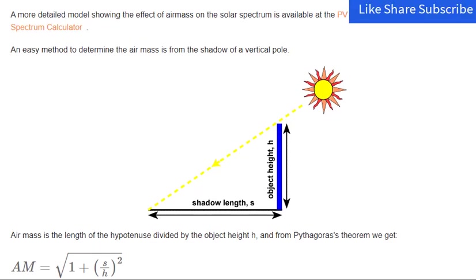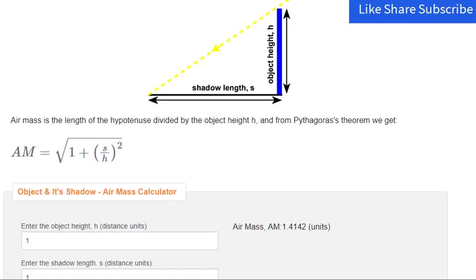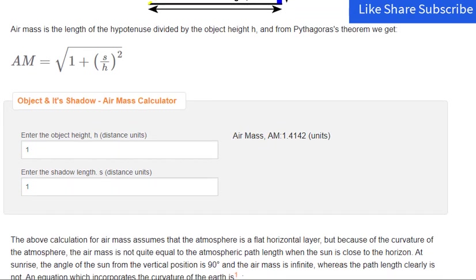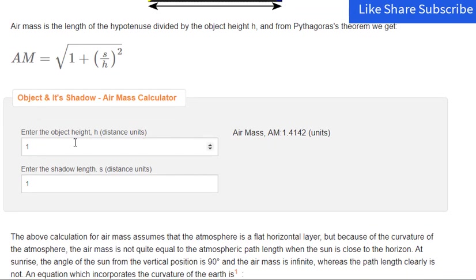The standard spectrum at the earth's surface is called AM1.5G. The G stands for global and includes both direct and diffuse radiation, or AM1.5D, which includes direct radiation only. The intensity of AM1.5D radiation can be approximated by reducing the AM0 spectrum by 28%, 18% due to absorption and 10% to scattering.